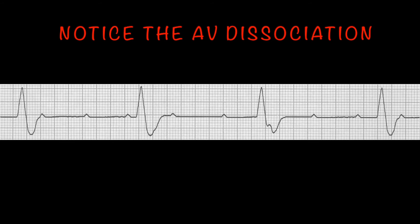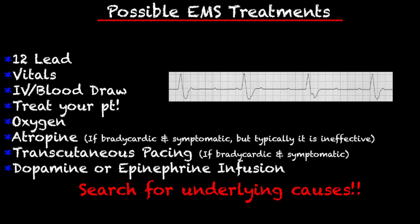Let's get into possible EMS treatments. We can check a 12-lead — this is where we'll find out that the patient has a third degree or complete heart block. We can obtain a set of vitals, get an IV and a blood draw if that's something you're able to do for your hospital. Treat your patient based on how they're presenting. Are they presenting with chest pain? Are they hypotensive? Are they bradycardic? If they were having chest pain, would they even be able to receive nitro, or would aspirin be the only option? Administer oxygen, and atropine if bradycardic and symptomatic — and with these patients, they tend to be bradycardic and symptomatic. Transcutaneous pacing if bradycardic and symptomatic and atropine doesn't work.